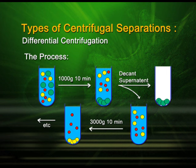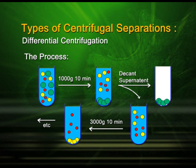Look into this diagram, where you can see that inside the centrifuge tube you have a green colored particle, a yellow colored particle, and a red colored particle. The green is the biggest, followed by the yellow, and the smallest is the red colored particle. When this cell homogenate is subjected to centrifugation at a particular RPM, the green colored particle, which is heavier or denser, will settle down and form the pellet.